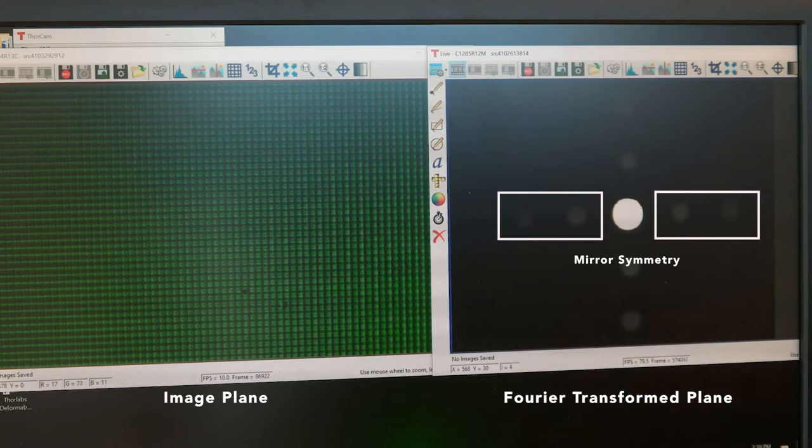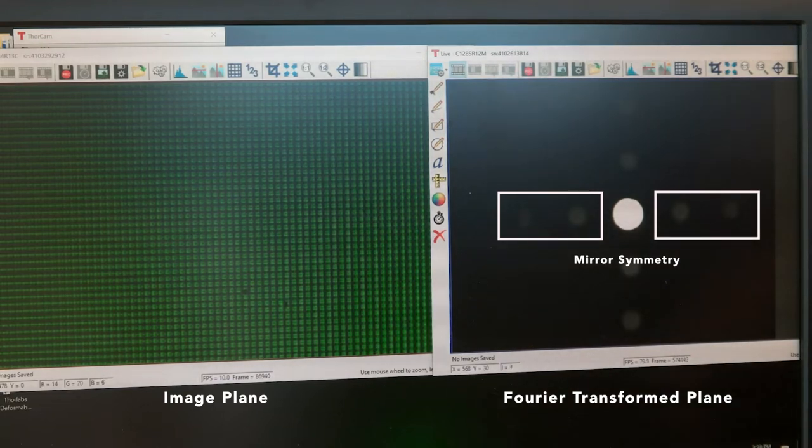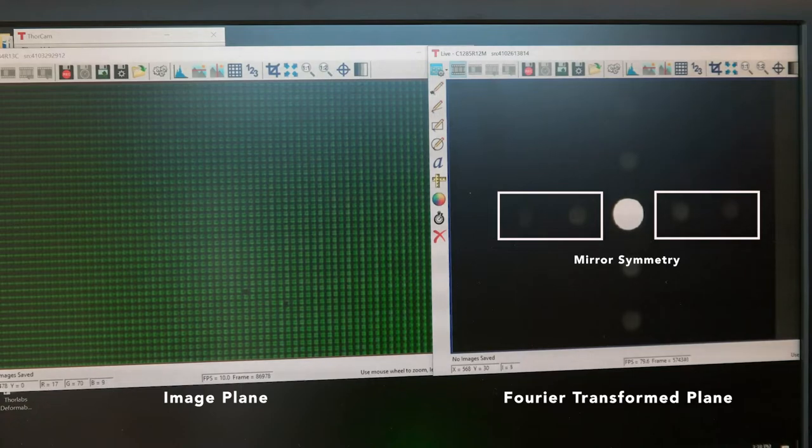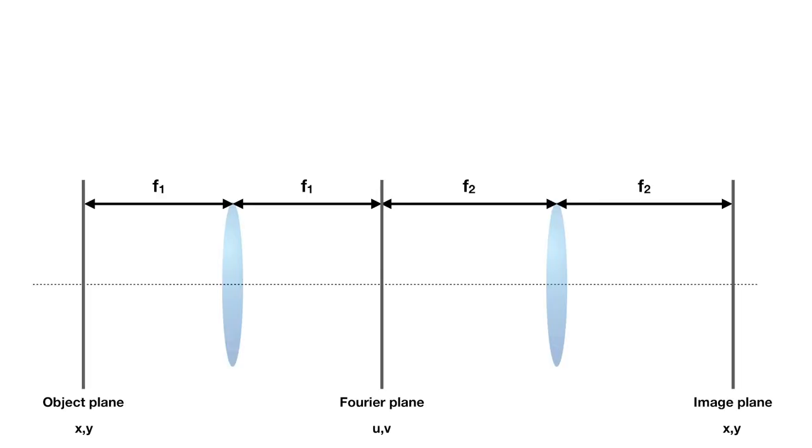For audio signals, we don't typically plot both sides. But for Fourier transforms of images, we typically plot the whole thing. Lenses perform Fourier transforms.